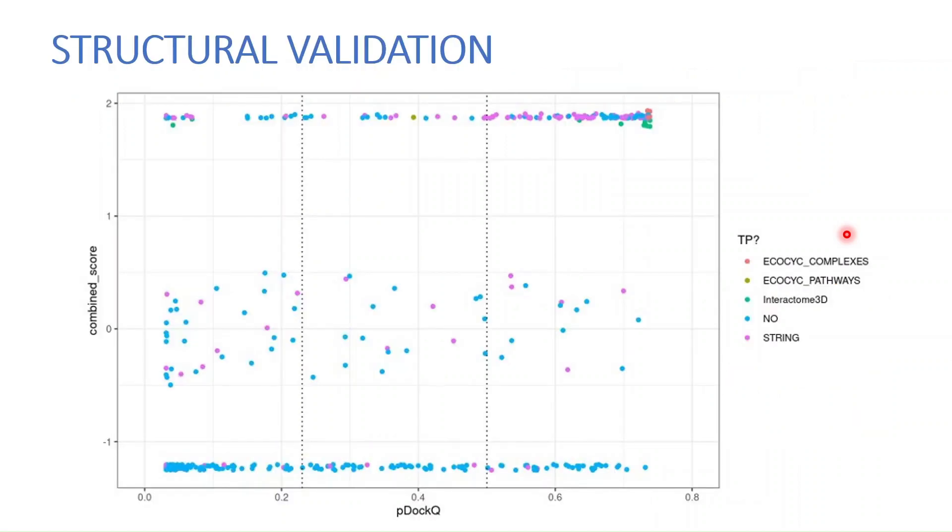In this figure you can see how our confidence score in the y-axis is related to the pDockQ which is the confidence score of AlphaFold Multimer, and at first glance you can see how all of the true positives which are the predictions that we made and are present in the databases are very confident predictions in our system and also very confident interactions for AlphaFold Multimer.